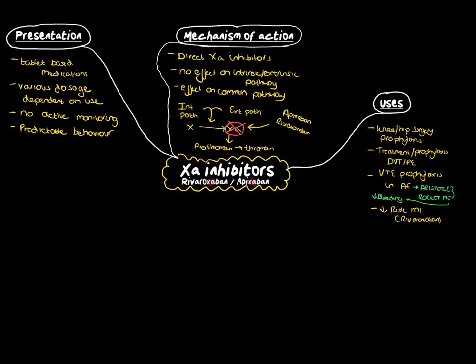When we think about the trials that are important for these, the first one is the Aristotle trial that was in the New England Journal in 2011 that looked at apixaban. It showed that it was superior to warfarin in reducing the risk of thrombotic events in atrial fibrillation. It also demonstrated there was less chance of intracranial haemorrhage and general bleeds when compared with warfarin. However, the incidence of GI bleed were about equivocal between the two drugs.